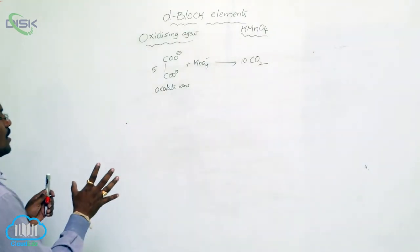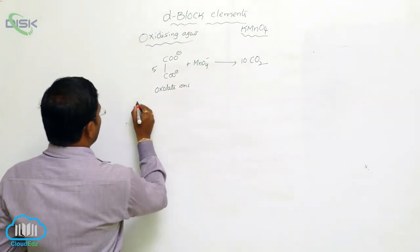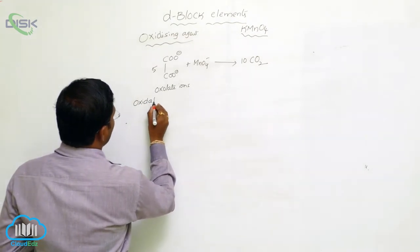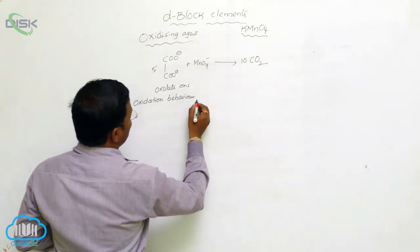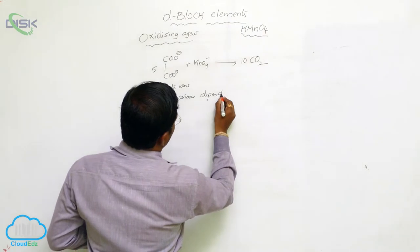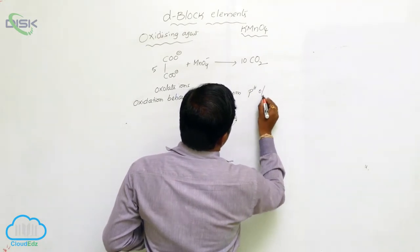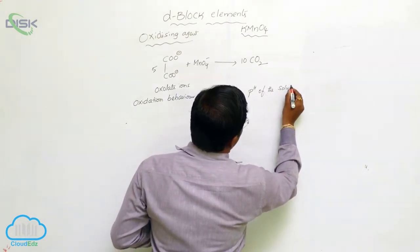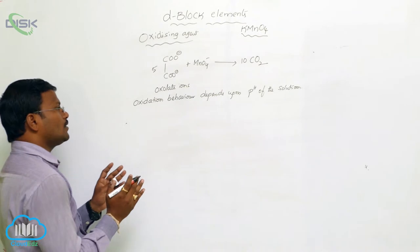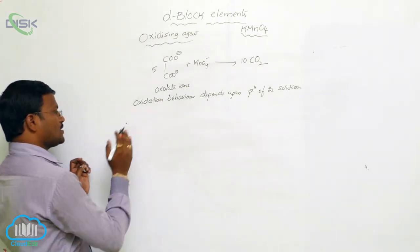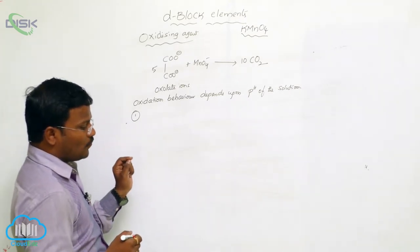All these are oxidation reactions of KMnO4. The oxidation behavior depends upon the pH of the solution. Two conditions are favorable for KMnO4 to act as an oxidizing agent. The first one is oxidation reactions of KMnO4 in acidic medium.